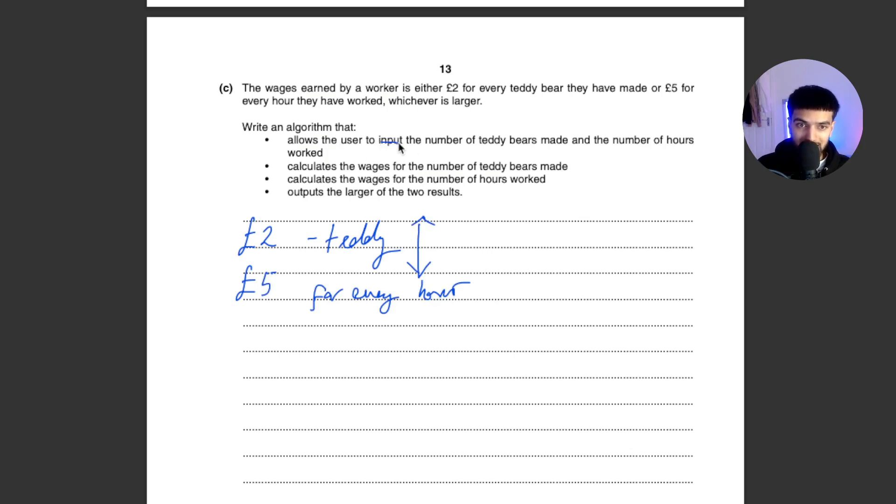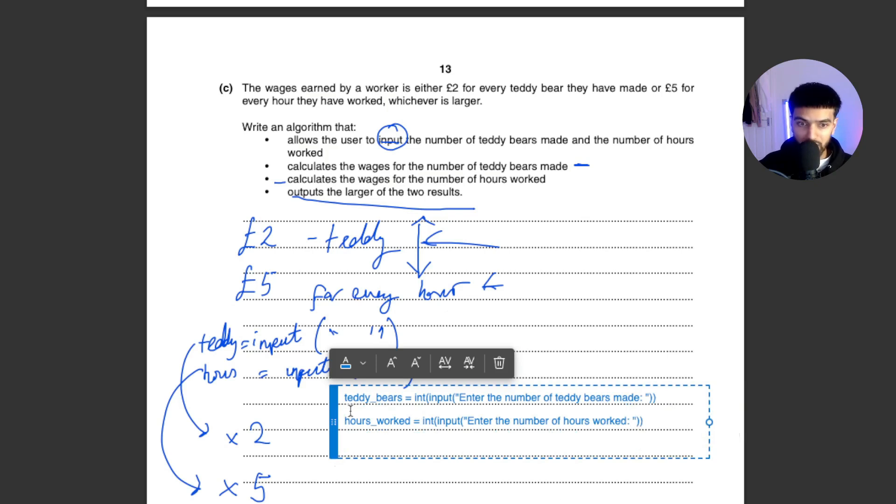The wages earned by workers - either two pounds for every teddy bear, so two pounds per teddy, and five pounds for every hour, whichever is larger. So we're going to be comparing these two values. Now we need to write an algorithm that allows the user to input - again it says input the number of teddies made and the number of hours worked. So these two things are basically going to be input, so input and we're going to save that into maybe some variable called teddy and even here we're going to have hours. Now that we've got the two variables, we need to calculate the wages for the number of teddy bears made, which is two pounds for every teddy bear. Multiply this by two to find the total wage, so you just do this multiplied by two.